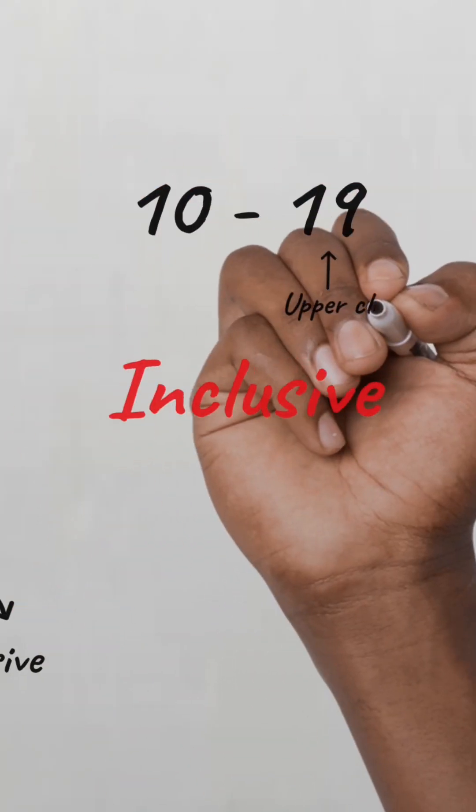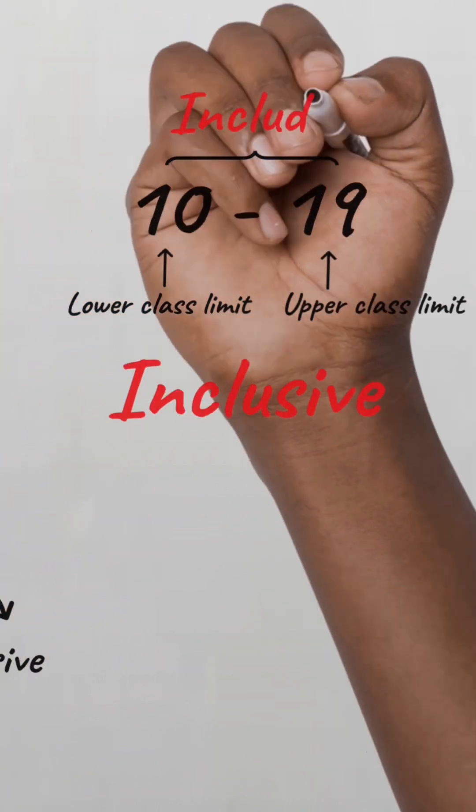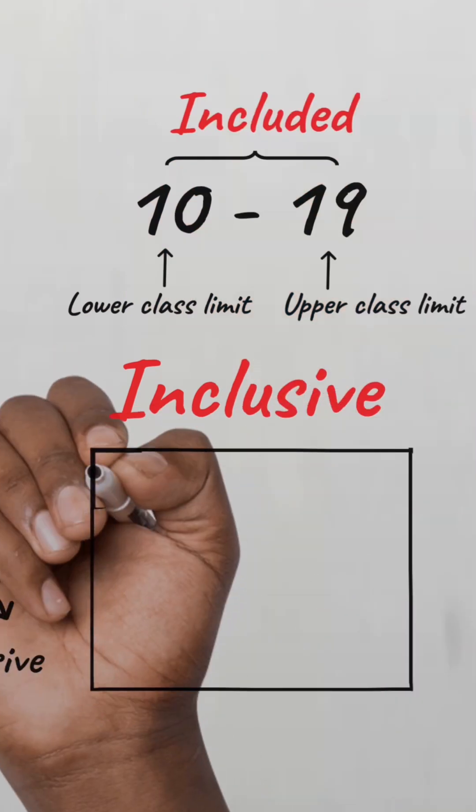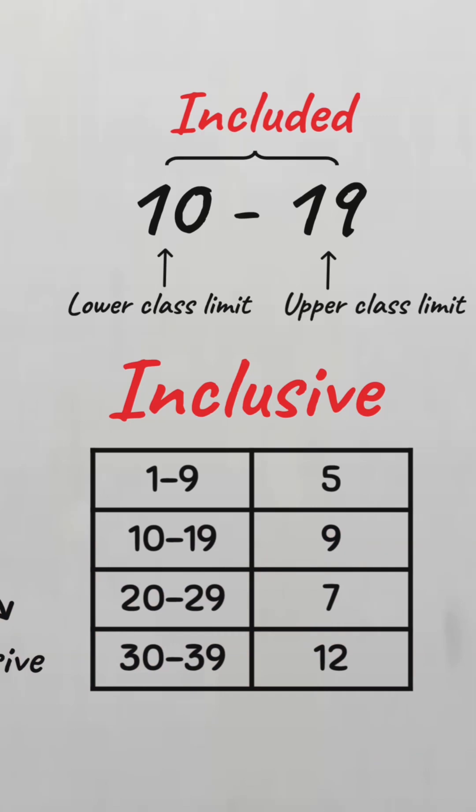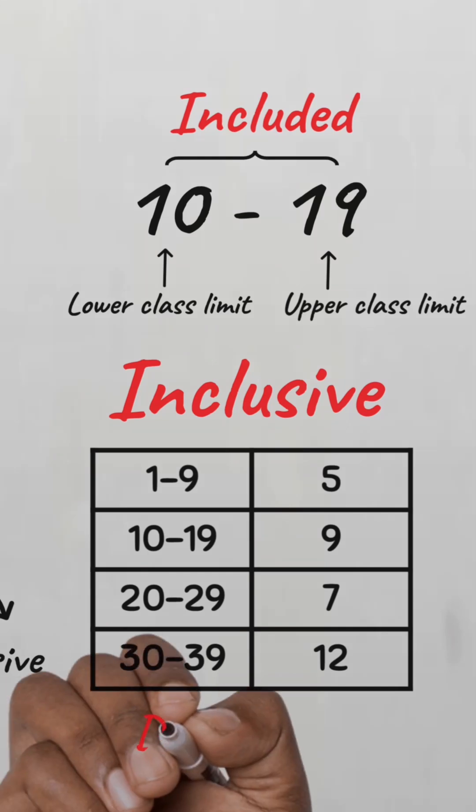In the inclusive type, both the upper and lower limits are included in each class. For example, if we construct a class interval of 1 to 9, 10 to 19, and so on, each class will include all the values in the data from the lower limit to the upper limit. This is useful when the data is only in whole numbers, i.e., discrete data.